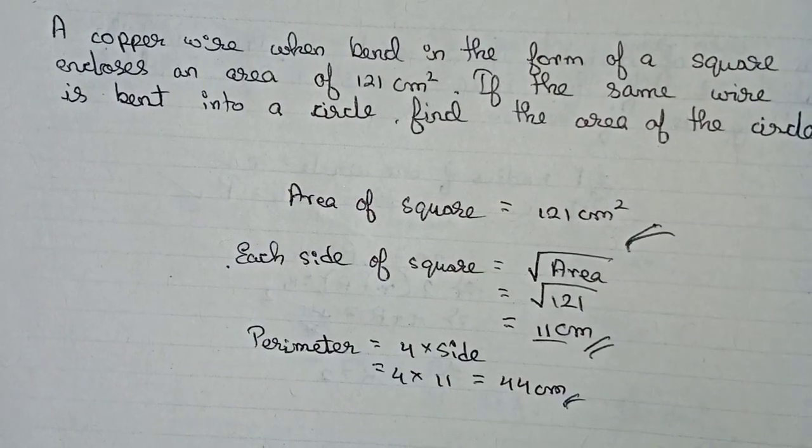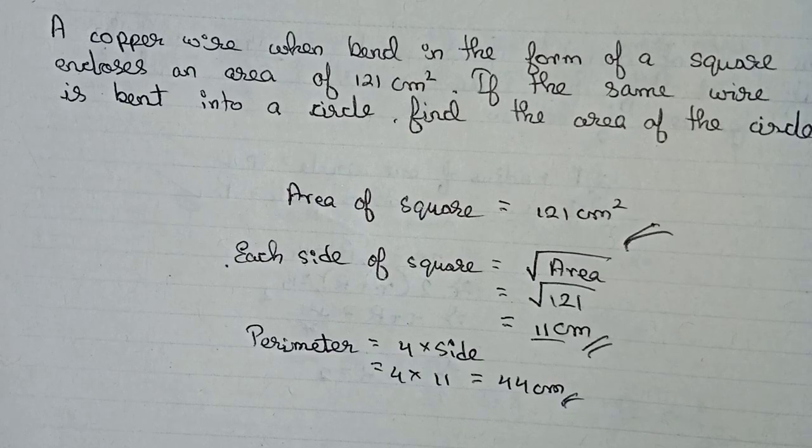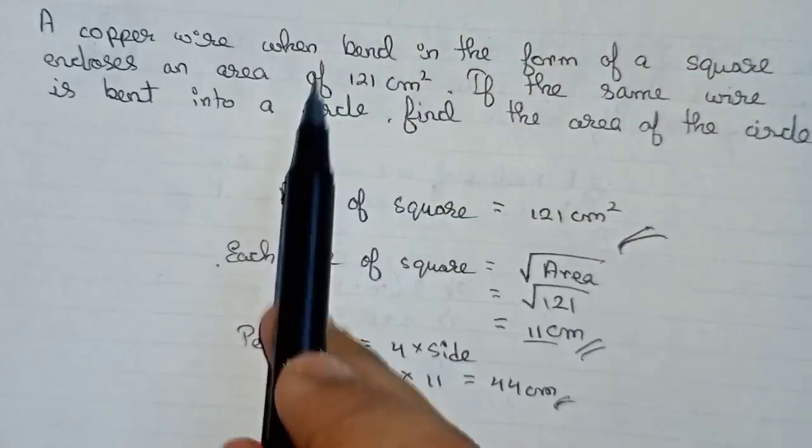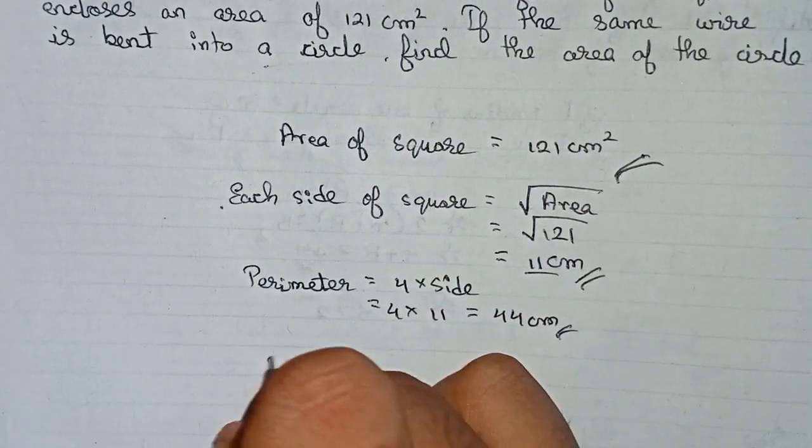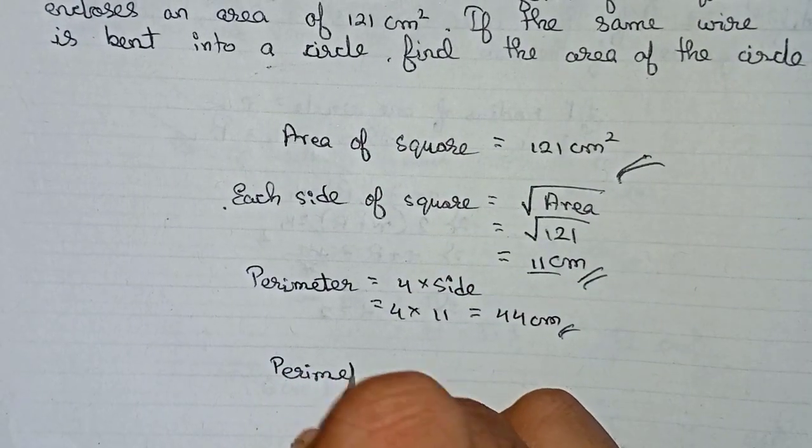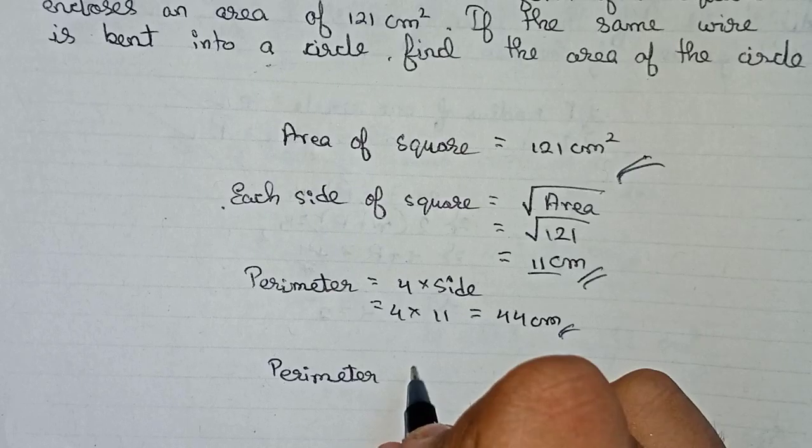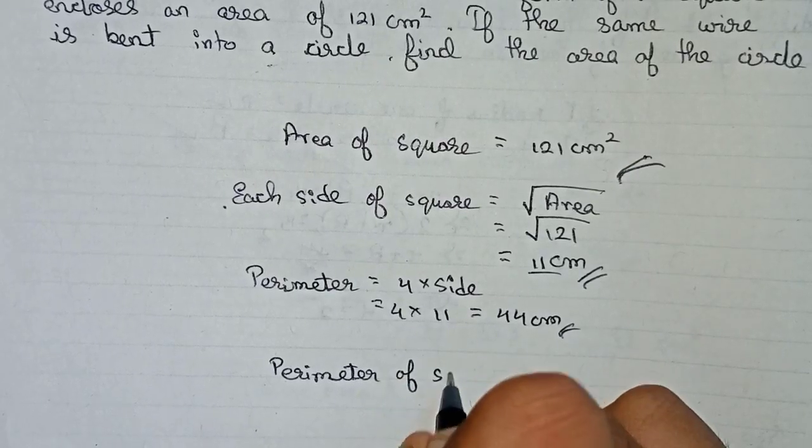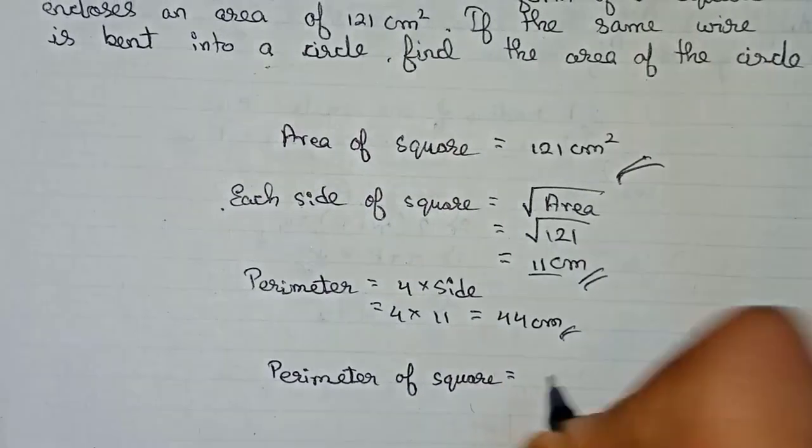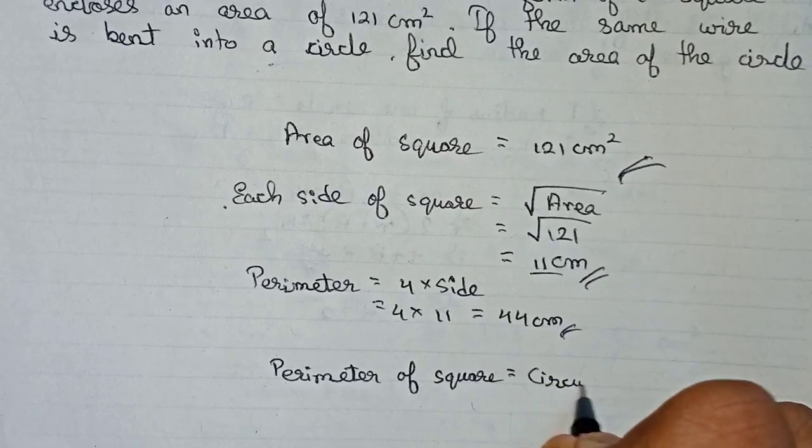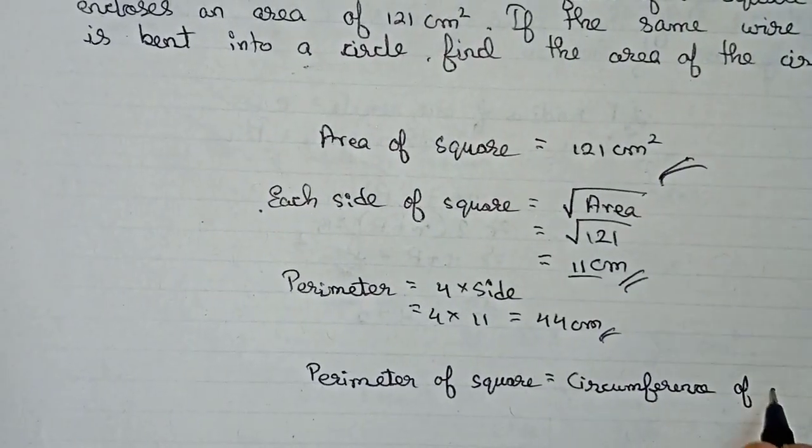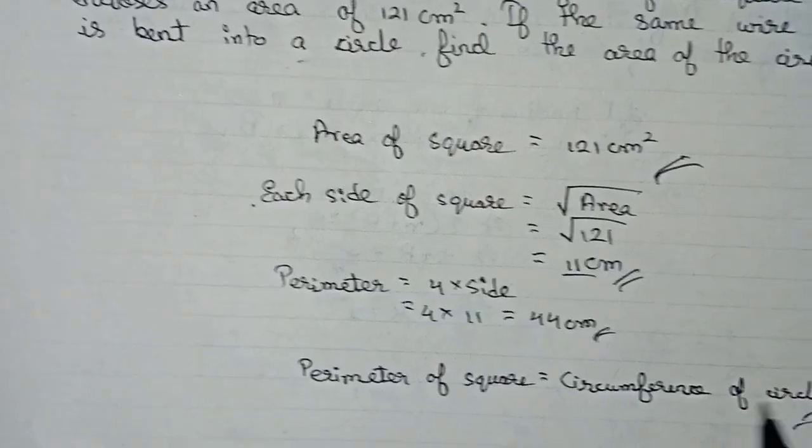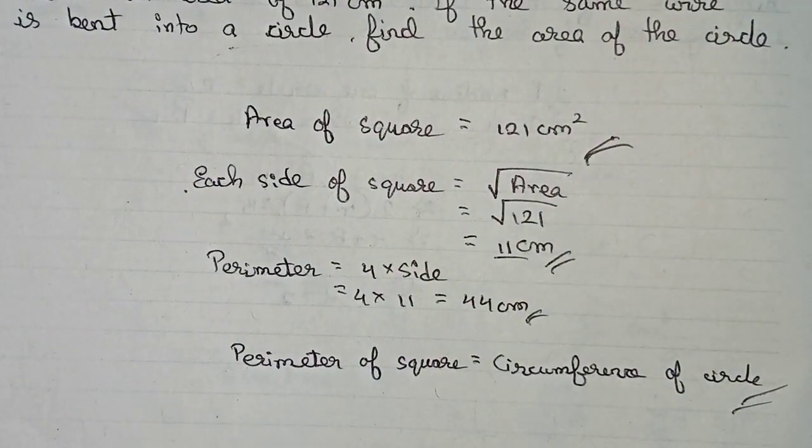So now in the question it is given that the square is then bent into the form of a circle. So we can say that perimeter of the square will be the circumference of circle, as the wire is neither increasing length or decreasing.